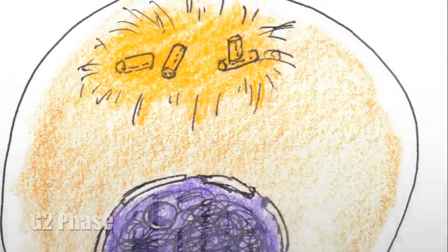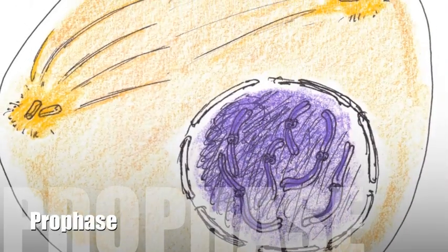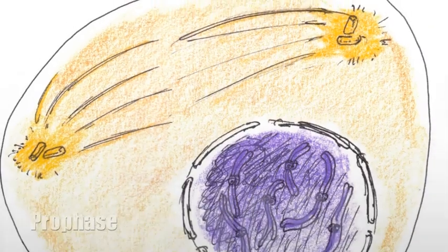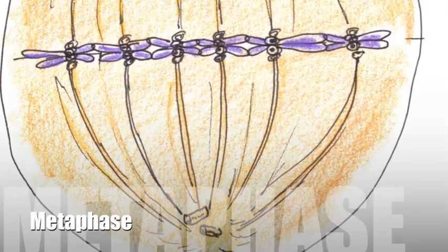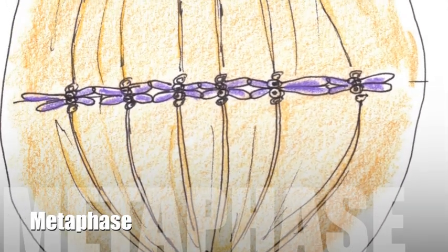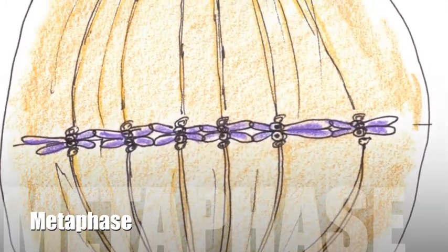First, chromosomes join and organize. The nuclear membrane begins to hide. The spindle apparatus soon appears and it quickly attaches to the centromeres. In metaphase, chromosomes line up at the equator. Daughter cells will come later.